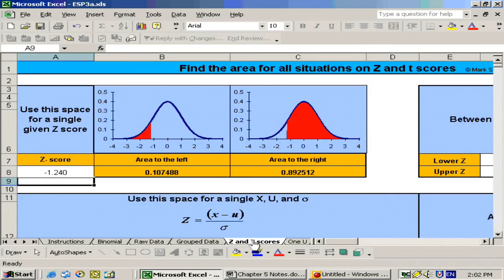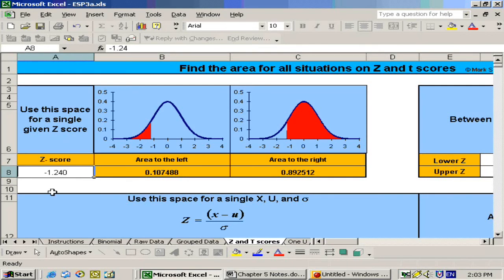On the same sheet, z and t scores, right at the top we can put in our z-score, whatever it is, and we were told that it's negative 1.24.